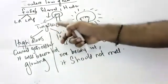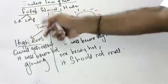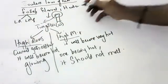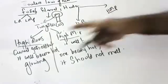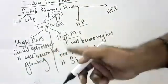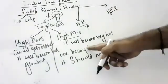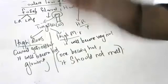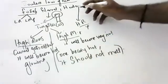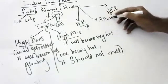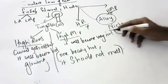Now for the heater coil: what are the characters? High resistance and high melting point — same as the filament. But for the heater we don't need glowing. So we can use an alloy. The alloy used is nichrome, which is made up of nickel and chromium.